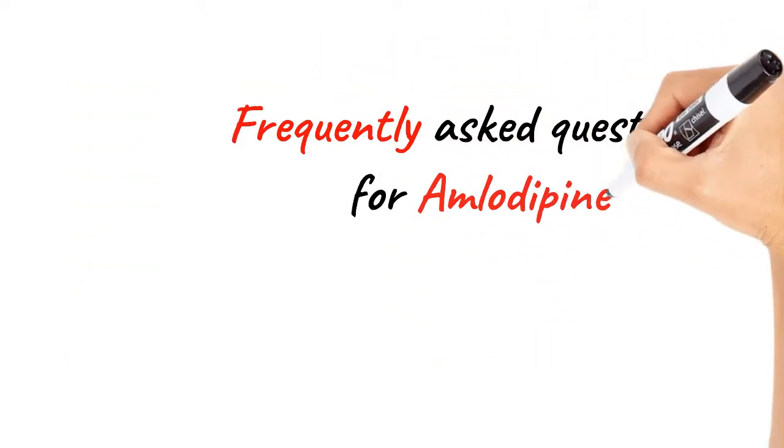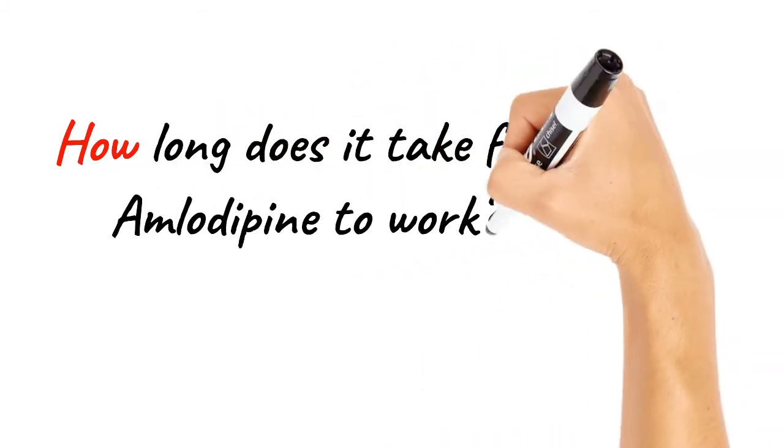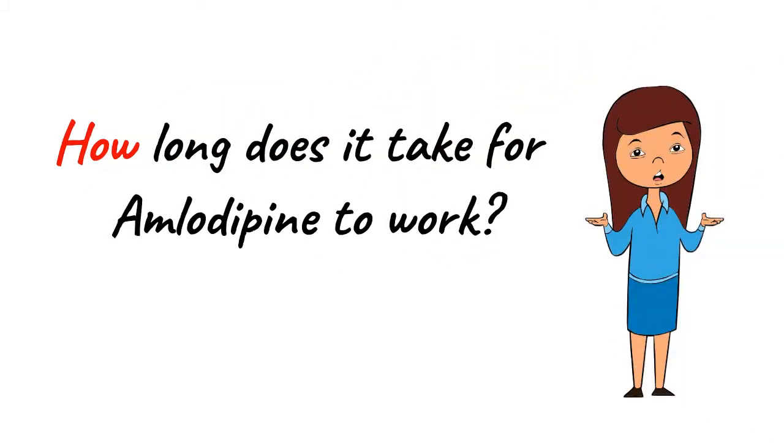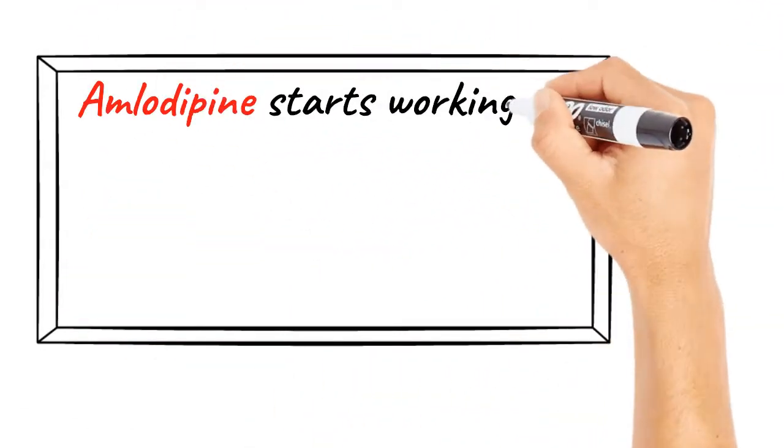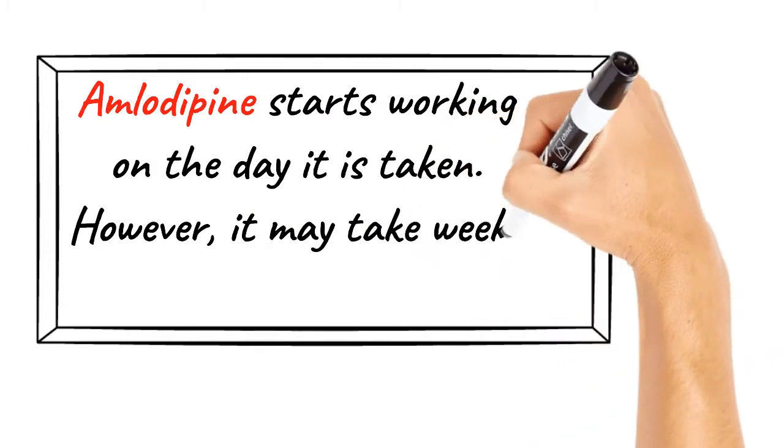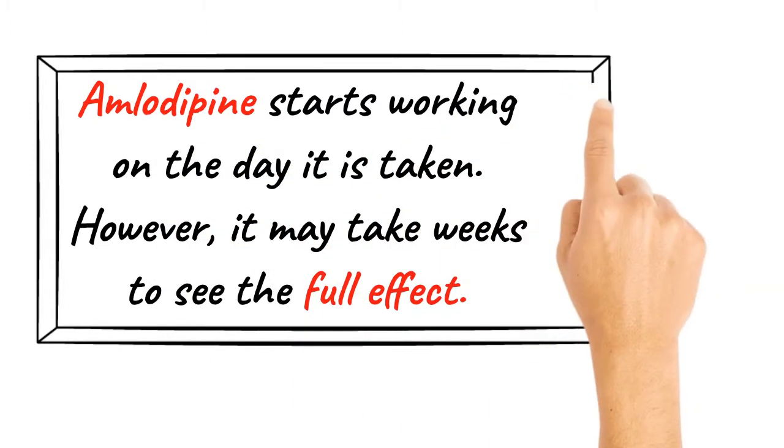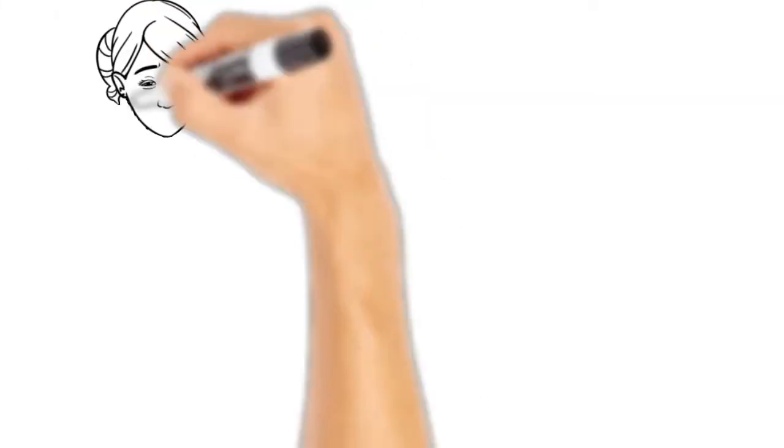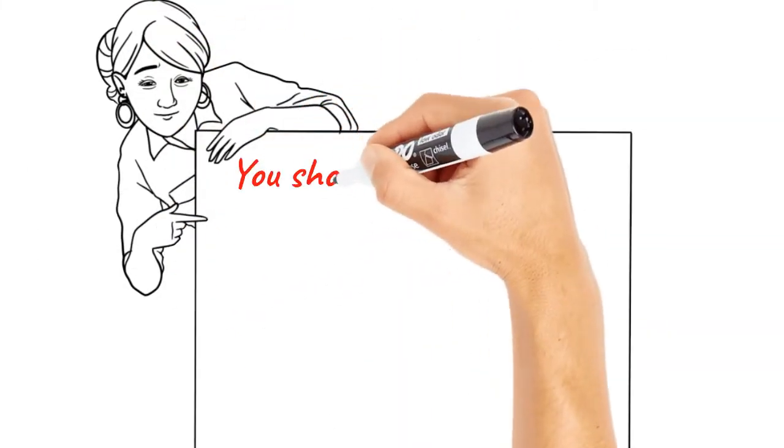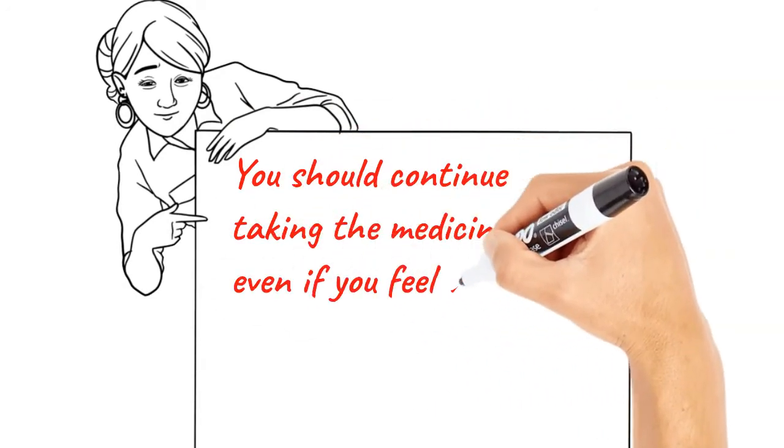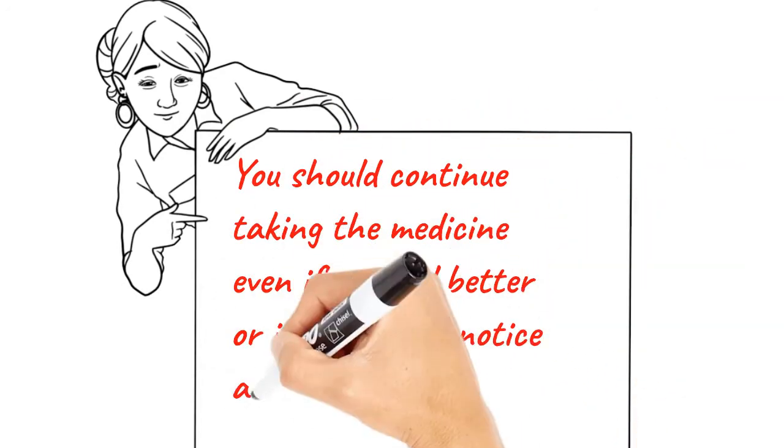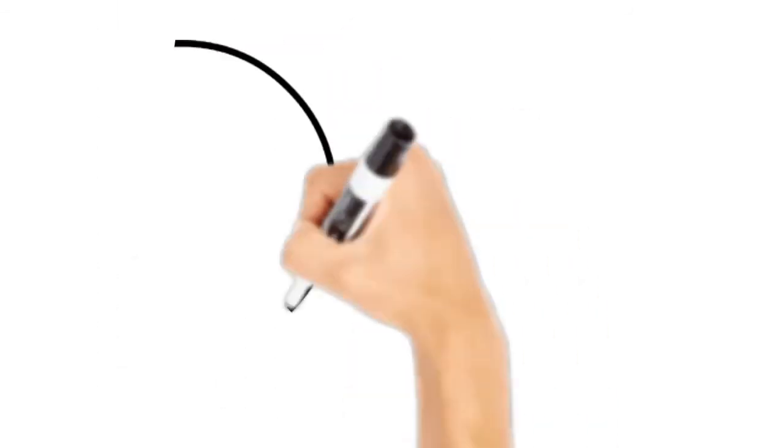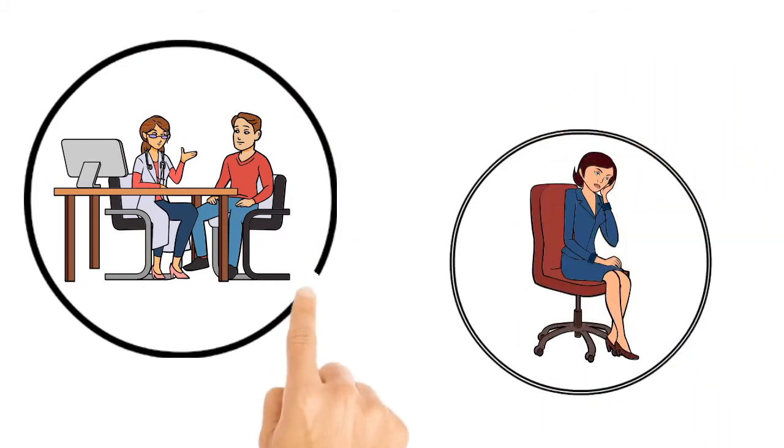Frequently asked questions for amlodipine. How long does it take for amlodipine to work? Amlodipine starts working on the day it is taken. However, it may take weeks to see the full effect. You should continue taking the medicine even if you feel better or if you do not notice any considerable difference. Consult your doctor if you have any concerns or you feel worse after taking the medicine.